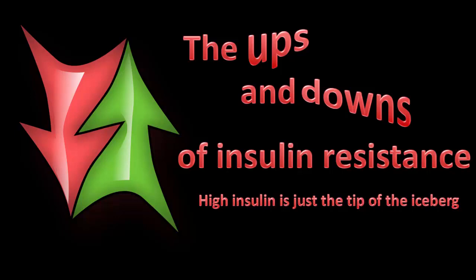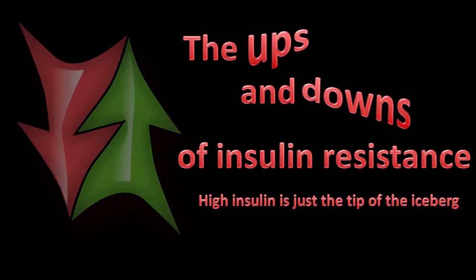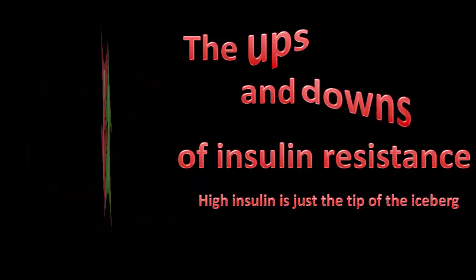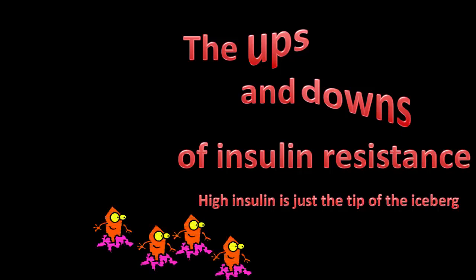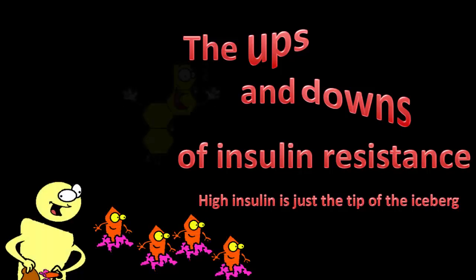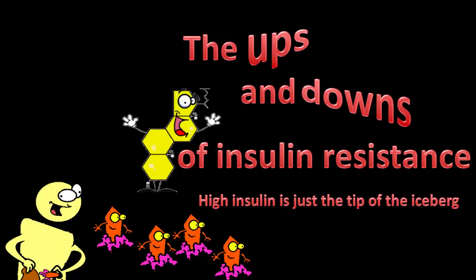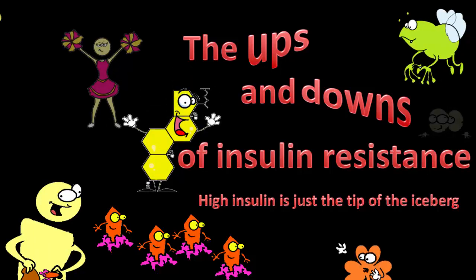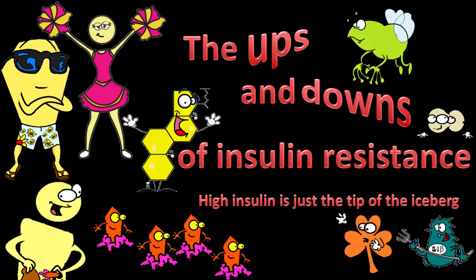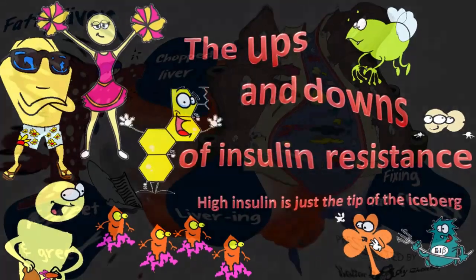When you're insulin resistant — that is, you've got metabolic syndrome — pretty much every chemical in the body is not quite right. Some are up, some are down, and few are actually at physiologically normal levels. Traditionally, the focus is on the big guns: sugar, insulin, and cholesterol. In this series, we take a look at some of the other players, who they are, what they are up to, and how they are part of the state of insulin resistance.